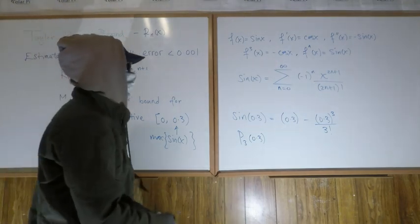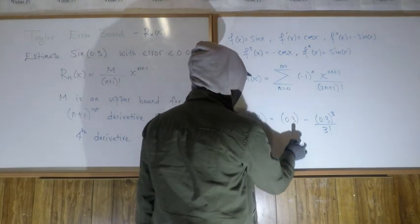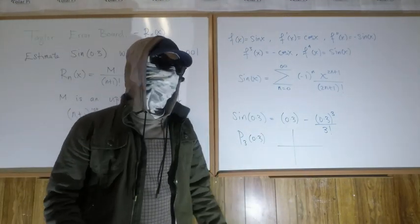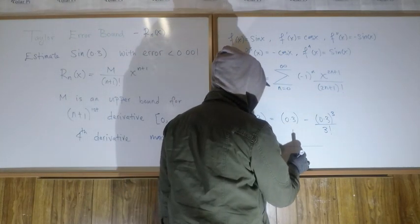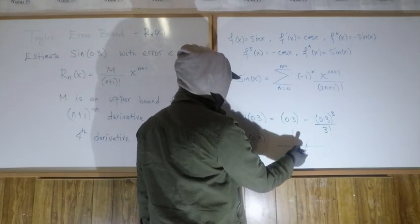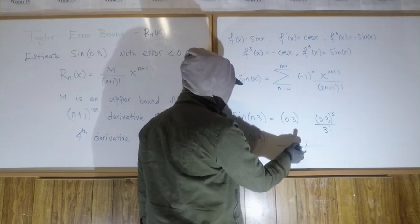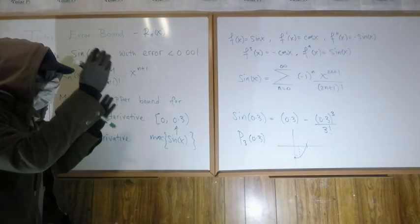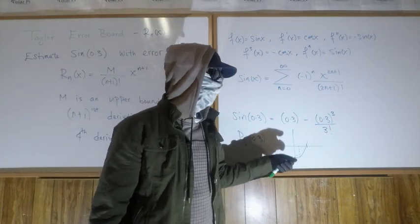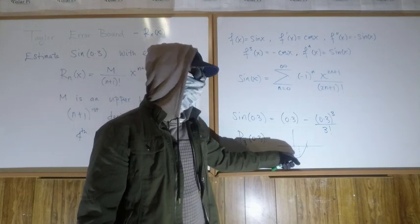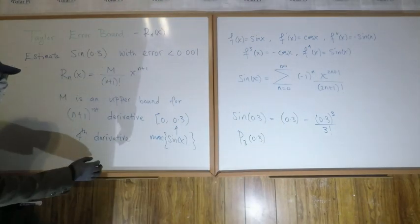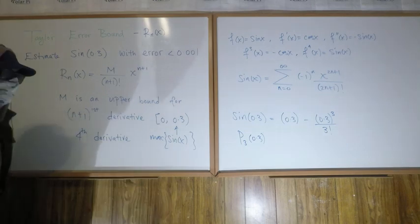For example, if we were working with the fourth derivative being negative cosine — which is not the case here — negative cosine looks like this, with a minimum at pi over 2. On the interval 0 to 0.3, at zero we're at negative one, so the absolute value of the maximum attained between 0 and 0.3 for negative cosine would be the absolute value of negative one, which is positive one.